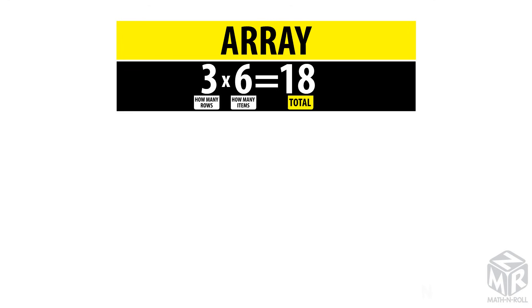The last strategy uses an array. An array sorts a group of objects into rows and columns. The first factor tells us how many rows we have. The second factor tells us how many items are in each row.